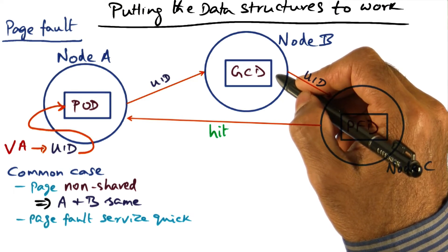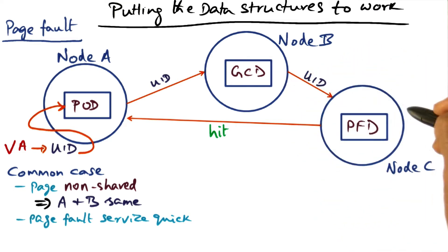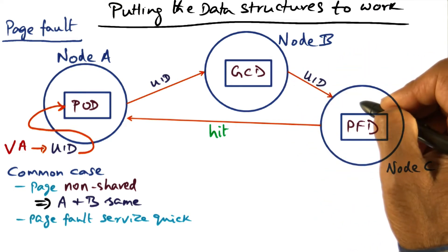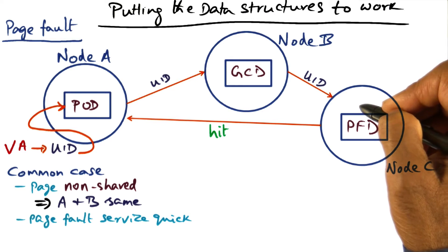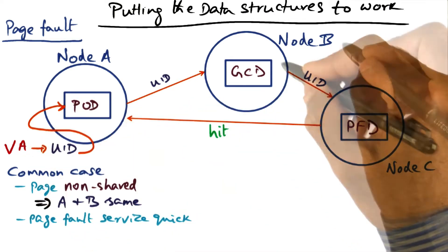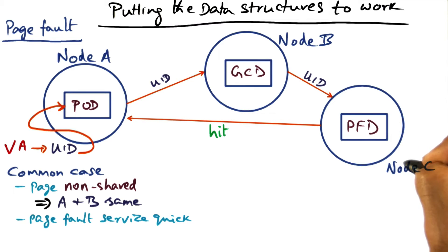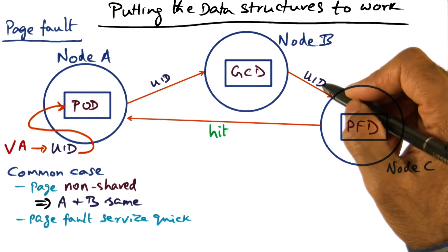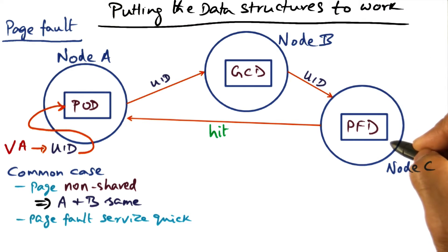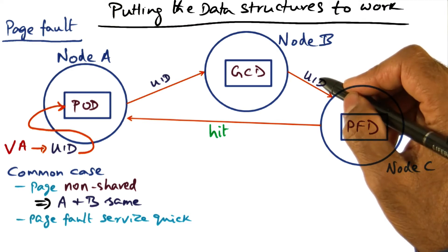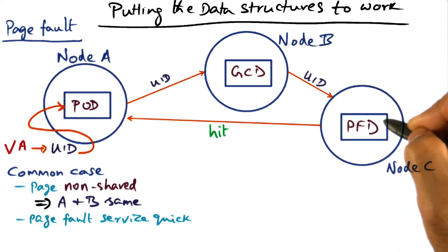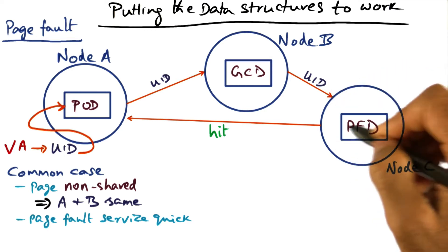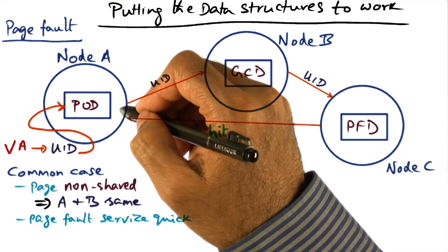Remember that the PFD is the equivalent of a page table in a normal system. Therefore, that's the node I want to send this UID to so that we can do the translation for this virtual address. So node B sends the UID over to node C, and node C contains the PFD that has the mapping between the UID and the page frame number backed by that node. It retrieves the page — it's a hit.